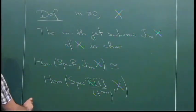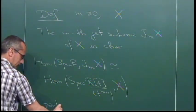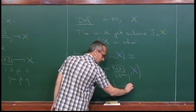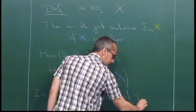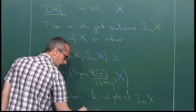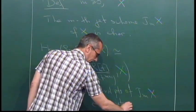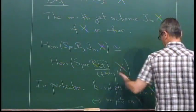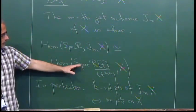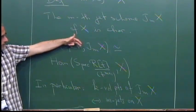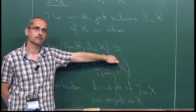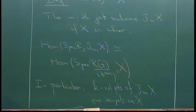In particular, if you look at K-valued points, the K-points of J_M(X) correspond to M-jets on X. You can think of this as a moduli space of maps from K[T]/(T^{M+1}) to X. Unlike other Hom-schemes that take quite a bit of work to construct, these are very easy. So J_M(X) exists, and let me sketch the construction, because one advantage is that the construction already tells you how to compute it.